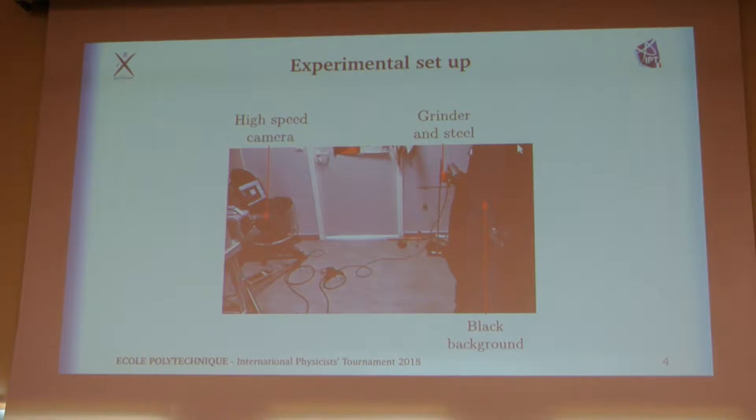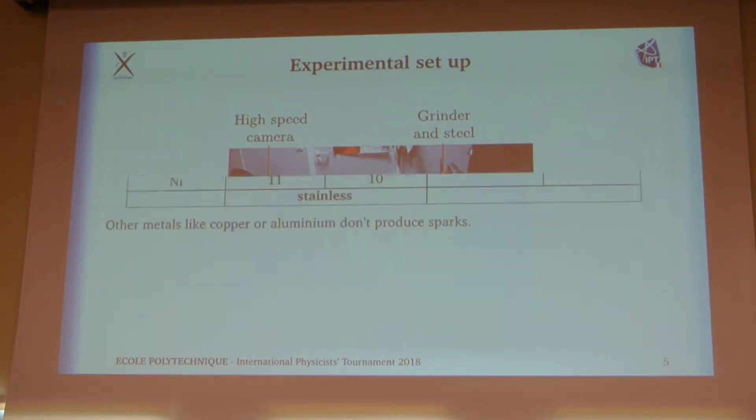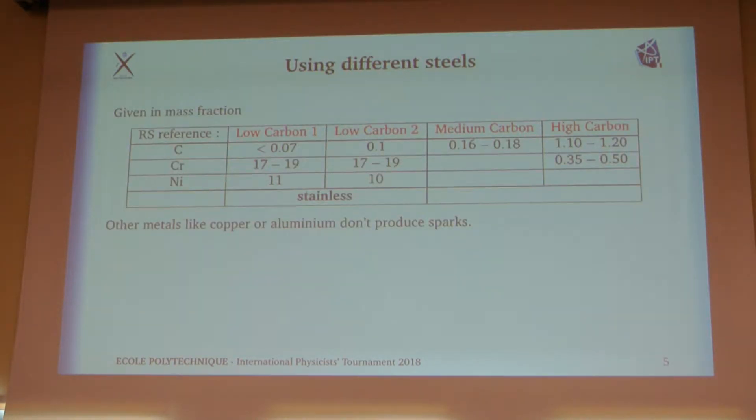This is the experimental setup we use to study this. Here on the right you can see a grinder which is used to produce the sparks. On the left there is a high-speed camera that is filming at about 1,000 frames per second in front of a black background in order to see the sparks. We used also different steels in order to assess the importance of different parameters, mainly carbon concentration. It's important to notice that other metals like aluminum or copper don't even produce sparks, so we did not study them.